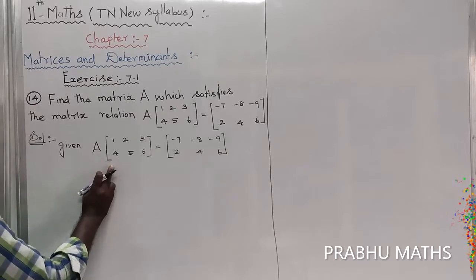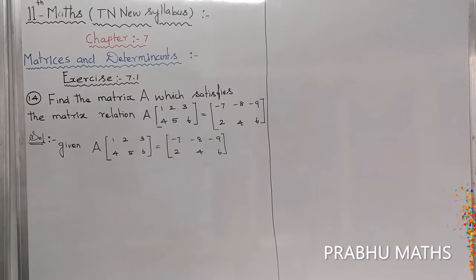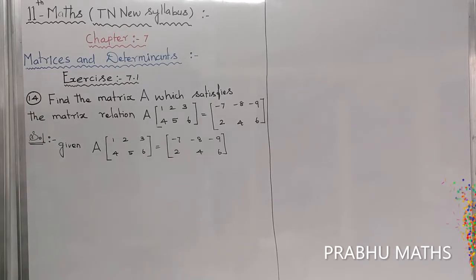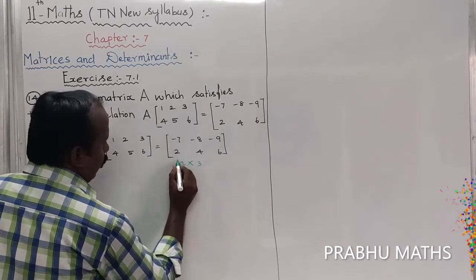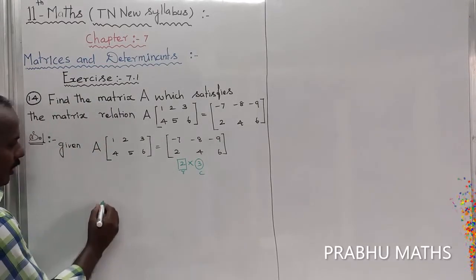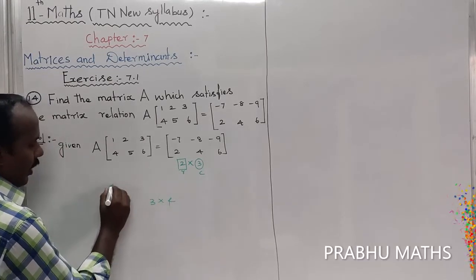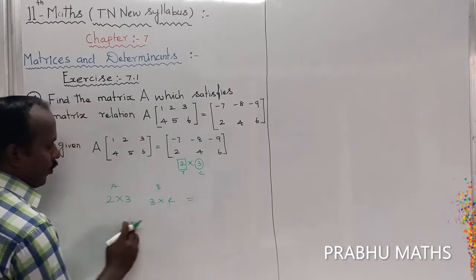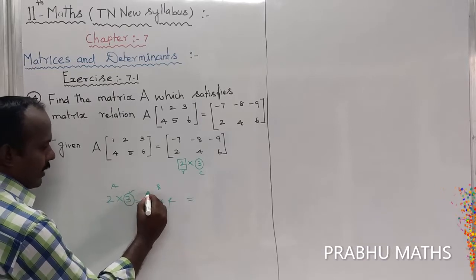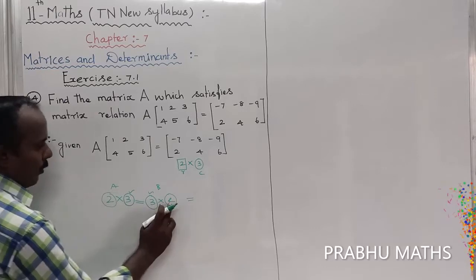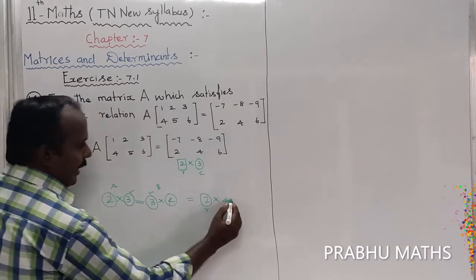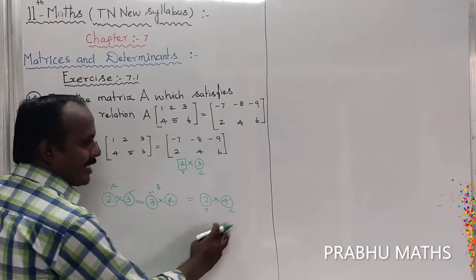To find matrix A, we use the matrix multiplication rule. When multiplying two matrices, the first matrix is 2 by 3 and the second matrix is 3 by 4, so A times B gives a result where the first matrix row and second matrix column determine the answer size — in this case 2 by 4.